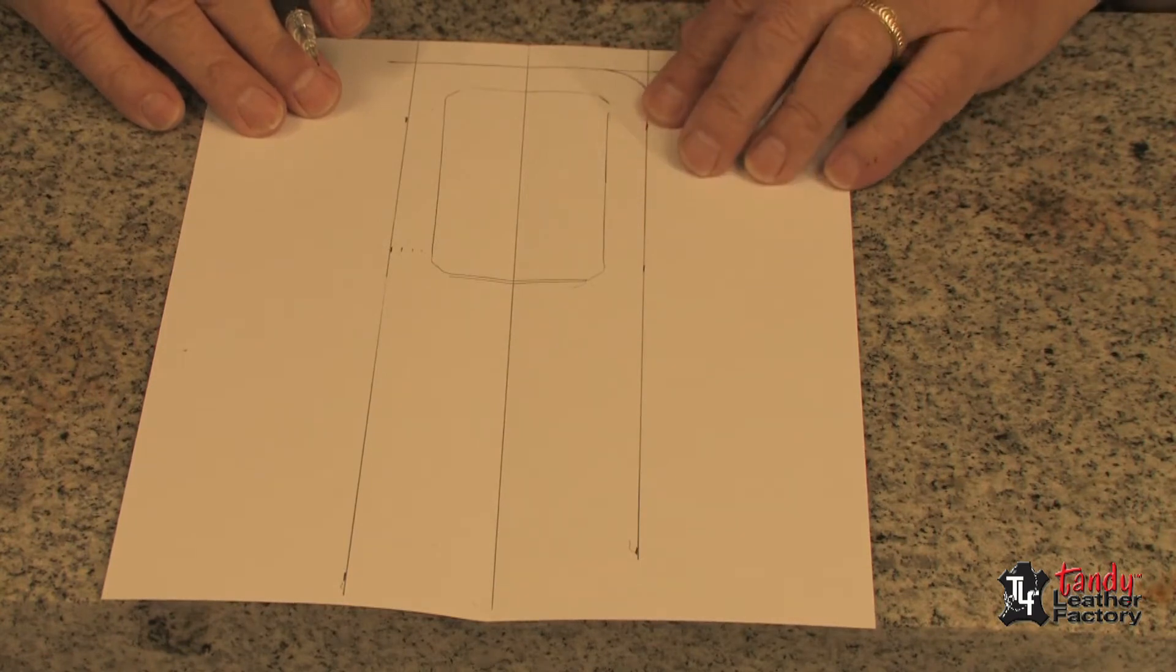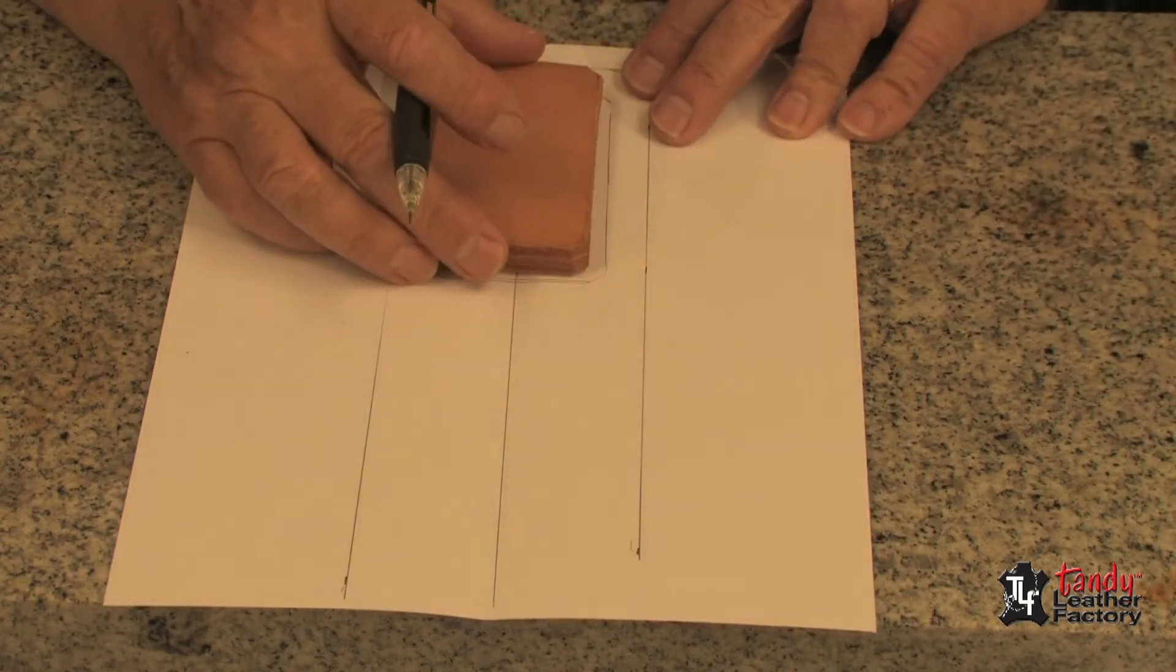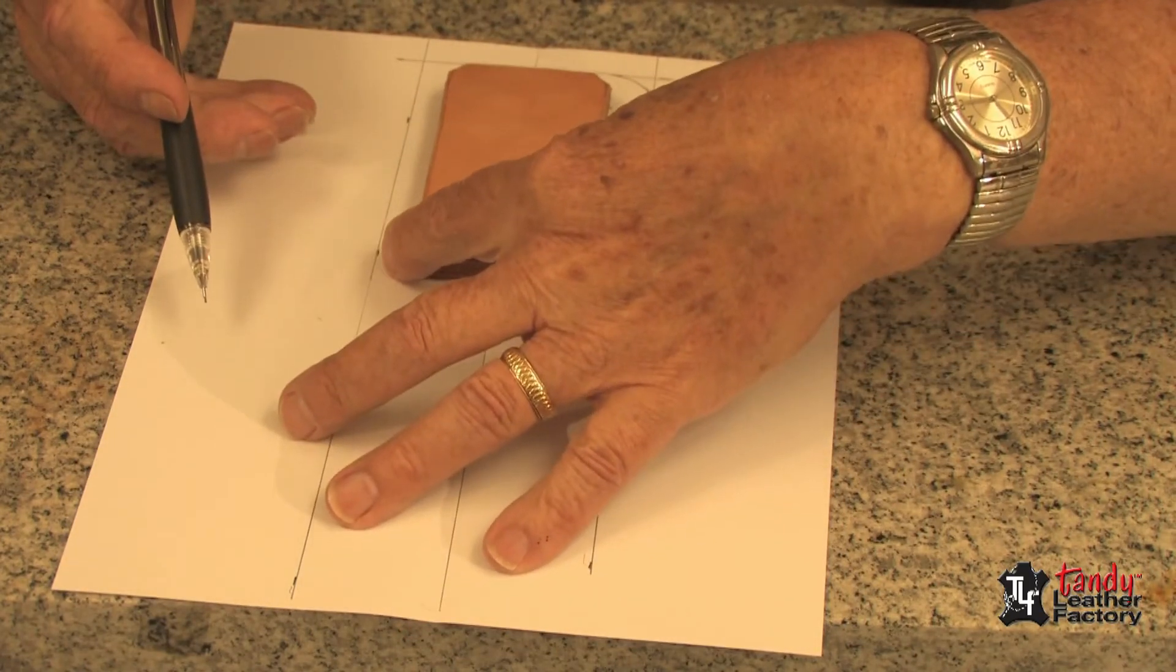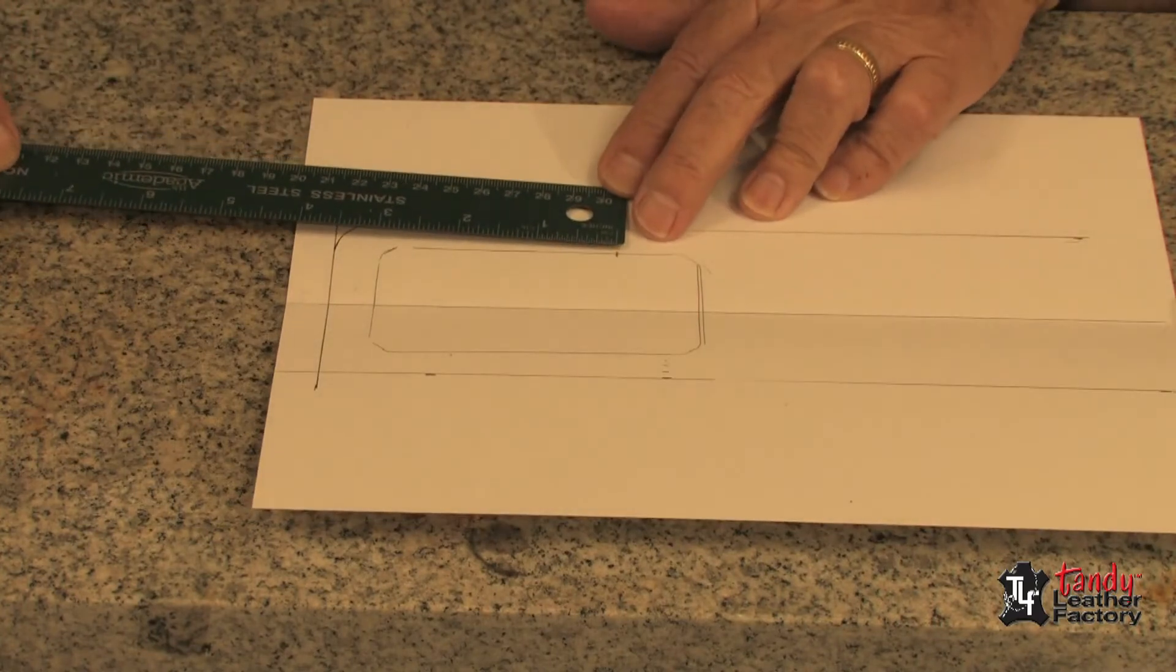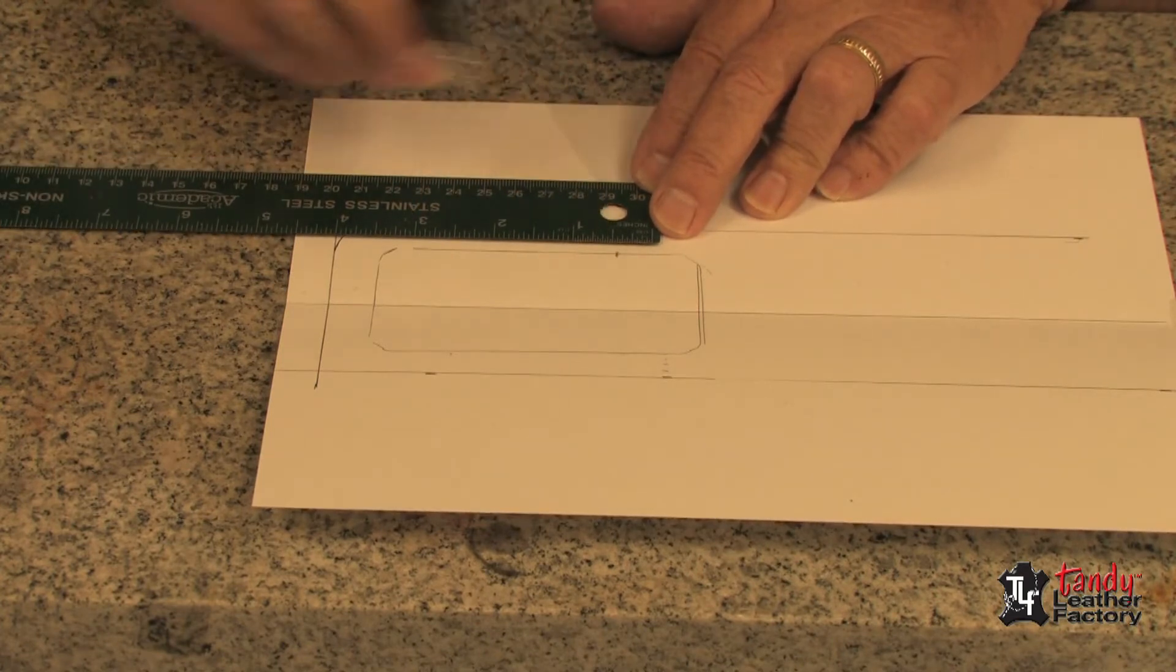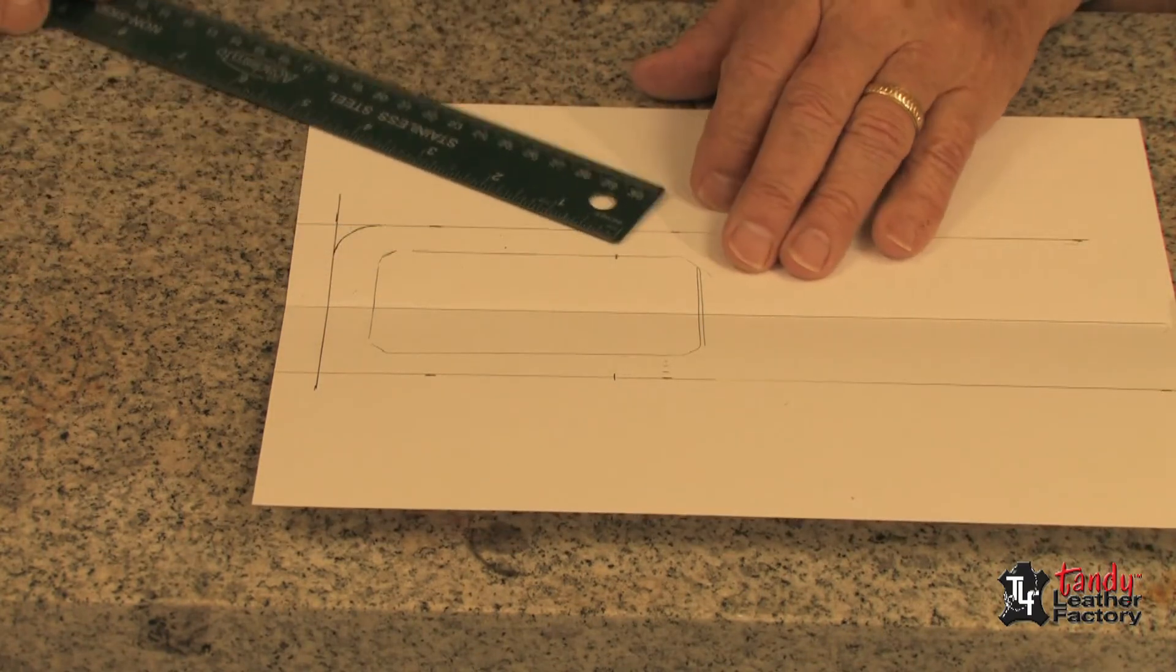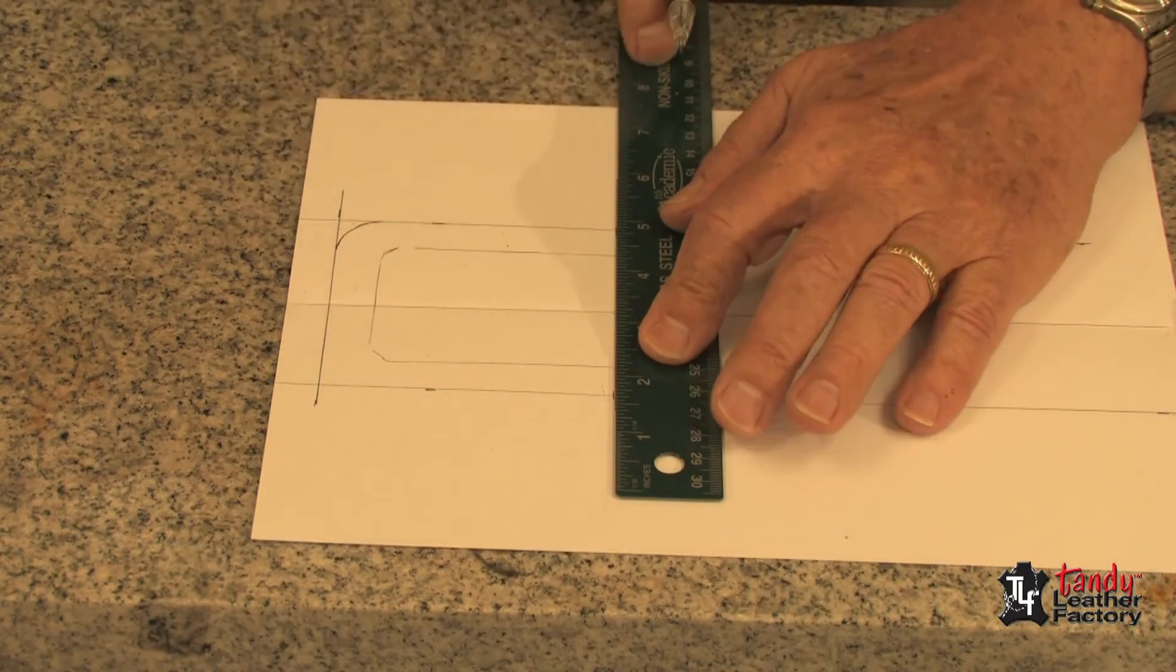The next thing we need to decide is how tall we want the front piece to be. Normally it would come up three-fourths of the way. We need to allow space so we can grab a hold of the phone to pull it out, so let's go about three-quarters of the way. Make a mark. We're up about three and a half inches from the bottom, so let's make a mark there at three and a half. And we will then draw a line across there. That will be the top of our front piece.